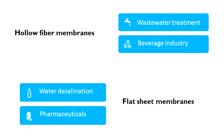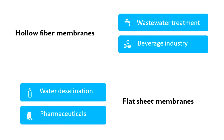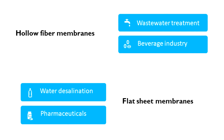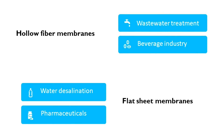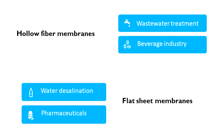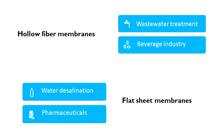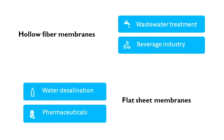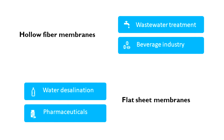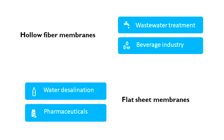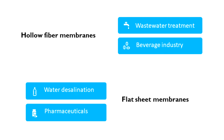Hollow fiber membranes can generally be cleaned by reversing the flow direction, removing the particles from the membrane surface. Flat sheet membranes are mainly used in NF and RO applications. Typical applications are water desalination for the production of drinking water, production of alcohol-free beer, and the separation of pharmaceuticals from the production process. These types of membranes are generally cleaned by treatment with dedicated cleaning agents.